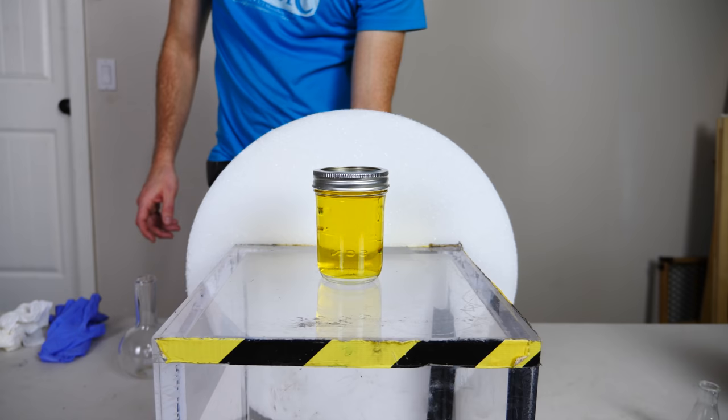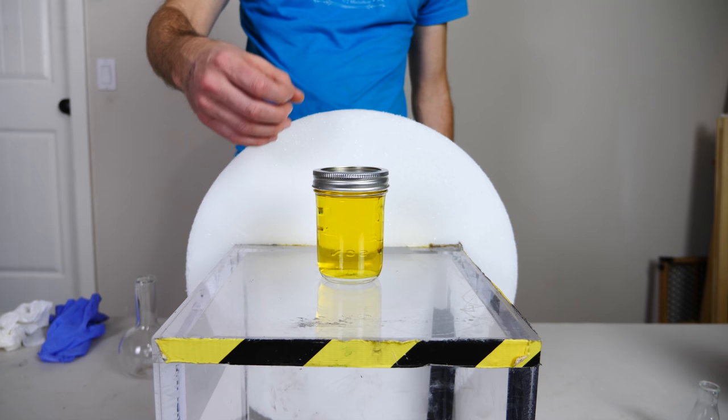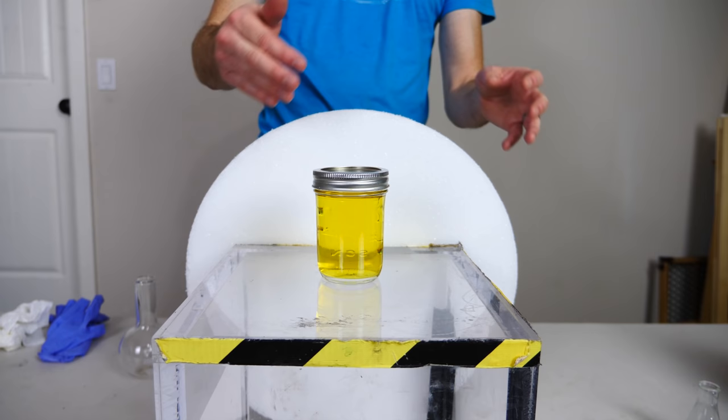Now the way this is working is when it's in this yellow state, that means that the indigo carmin is absorbing all of the blue light. That's because the molecule is completely reduced, so it can absorb the shorter wavelength light.